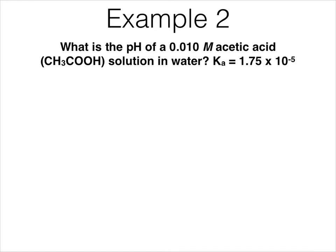So our next example is what is the pH of 0.010 molar acetic acid in a solution of water? And in this problem, I'm given the Ka of acetic acid. So step one is identify the type of species that acetic acid is. So acetic acid, acid or base?